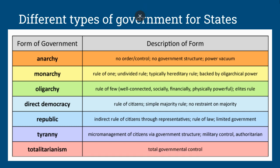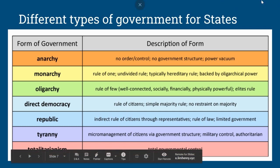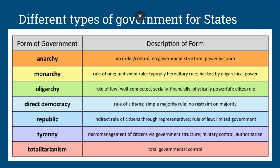There are different types of government for states, and I'm sure you've heard of most of these before, so I'm just briefly going to go over them. There are more forms of government than just these ones, but these are the ones we're going to focus on. Anarchy means there is no government structure — it's just a power vacuum. There is no order or control; it's basically chaos.